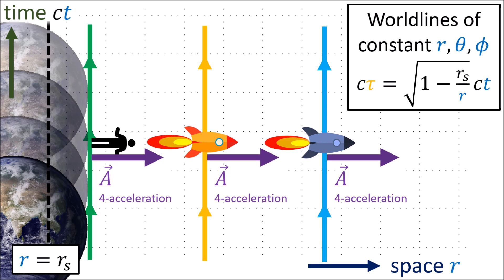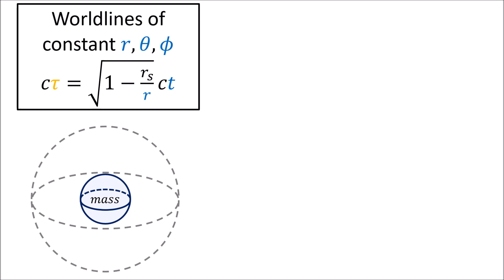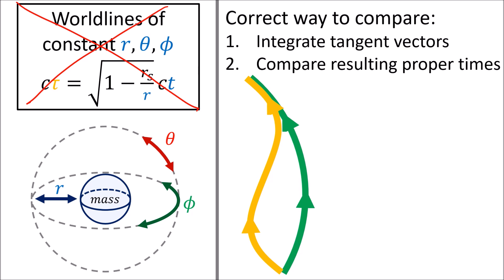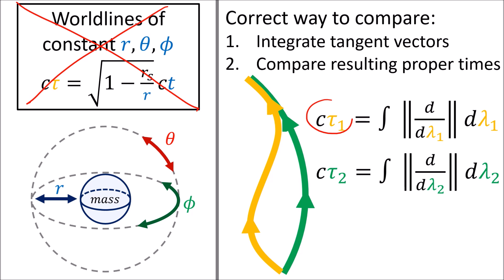So they would all measure a nonzero proper acceleration on an accelerometer — just like the accelerometer on a cell phone of someone standing on Earth measures nonzero proper acceleration. If we introduce infalling, outgoing, or angular orbital motion, this simple relation between t and tau no longer holds. The correct way to compare proper time along two arbitrary world lines is always to integrate the tangent vectors along those world lines and compare the resulting proper times.